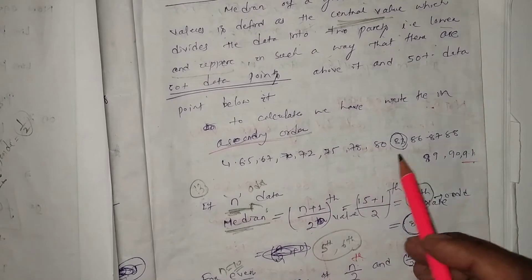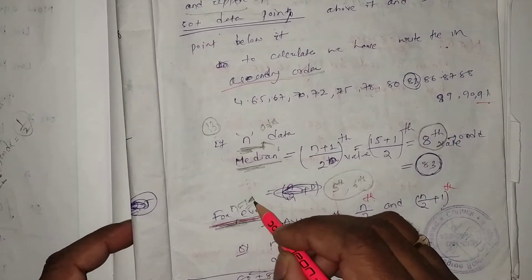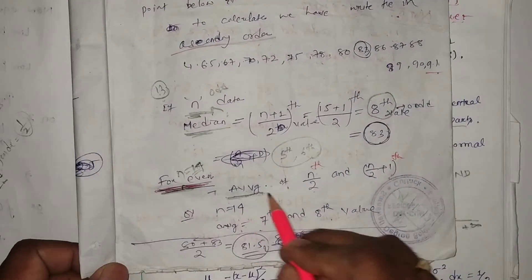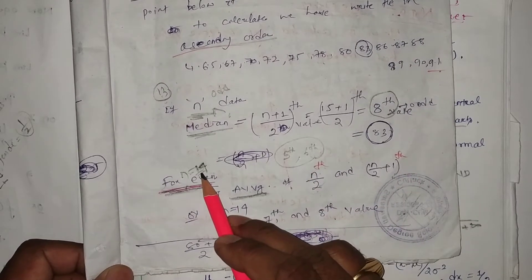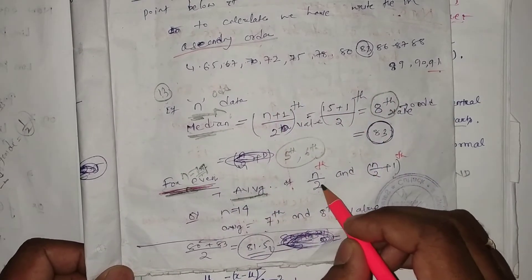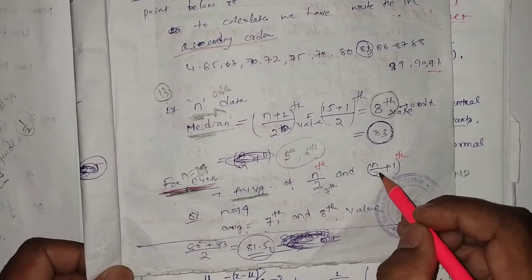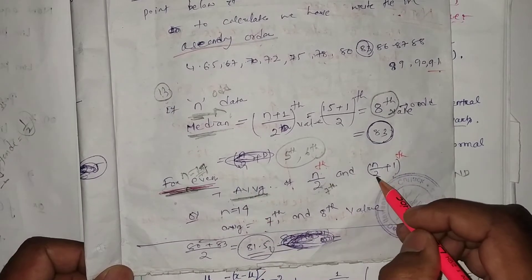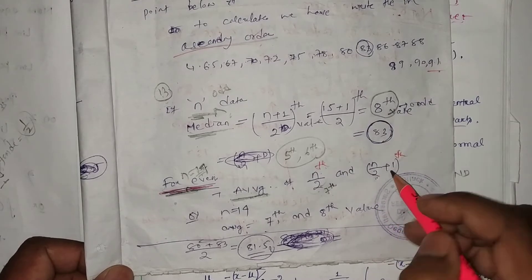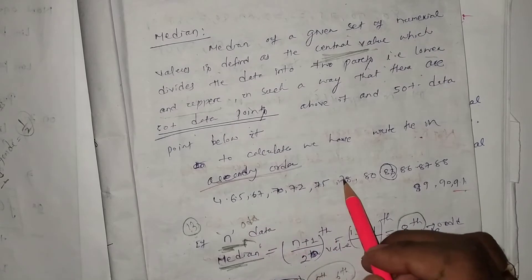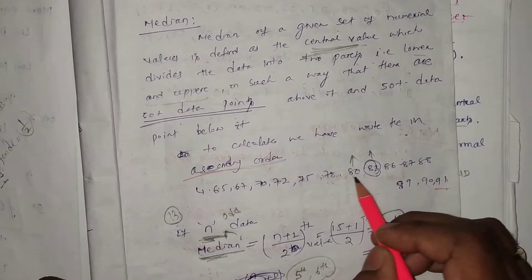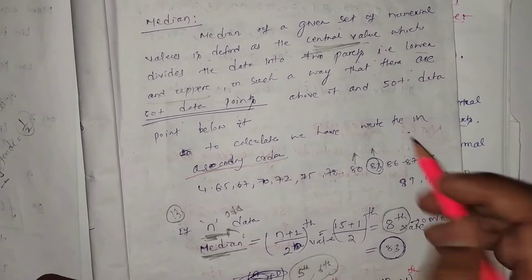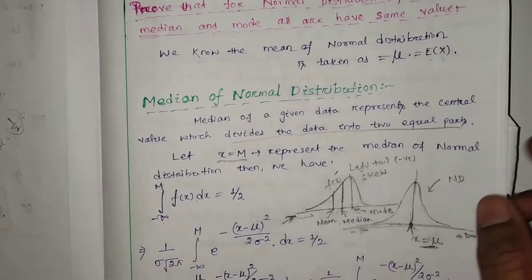If we have 14 data points (n even), the median is the average of the (n/2)th and (n/2 + 1)th terms — that is, the average of the 7th and 8th values. So for 14 data points: 1, 2, 3, 4, 5, 6, 7 (7th) and 8th — we take the average of these two values, and that will be called the median.